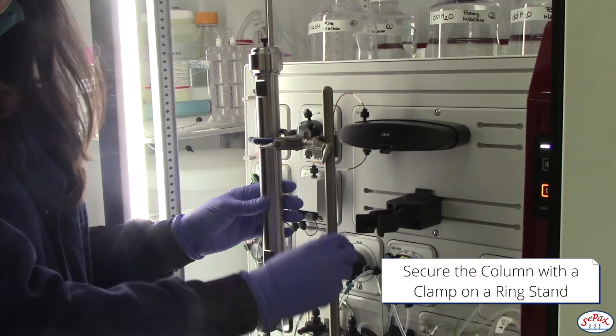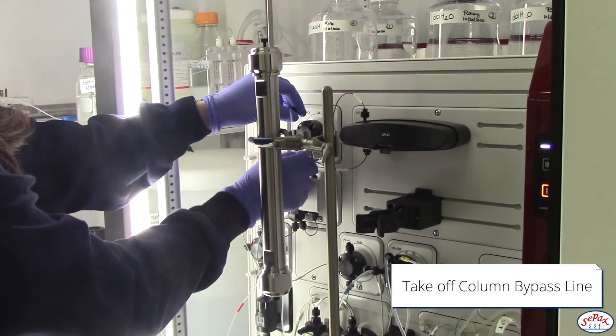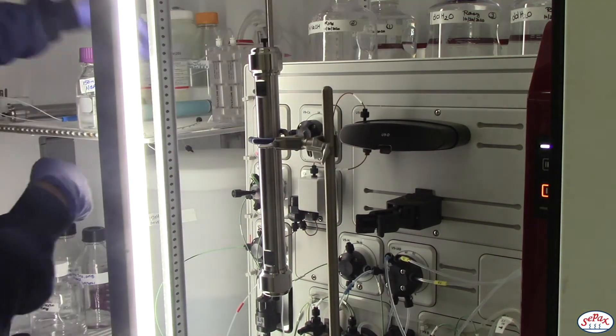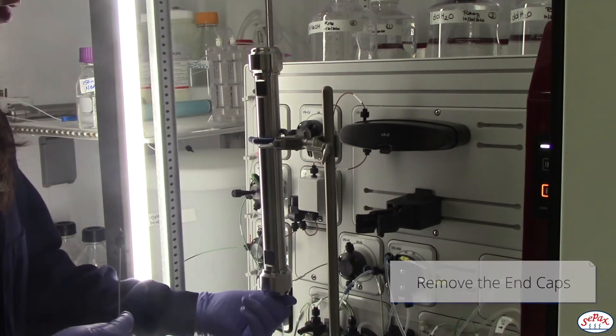Secure the column with the clamp on a ring stand. Take off the column bypass line. Remove the end caps on the column.